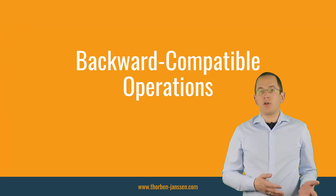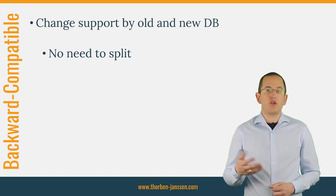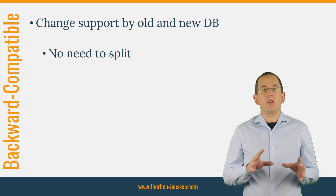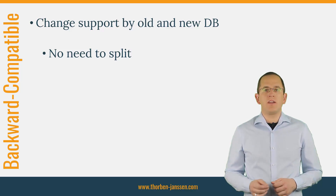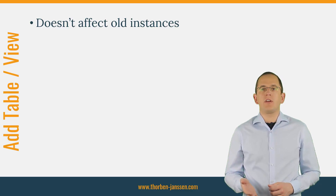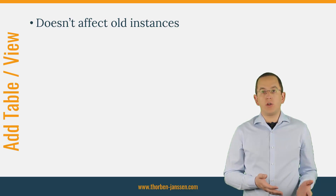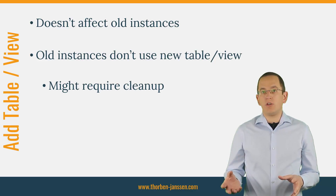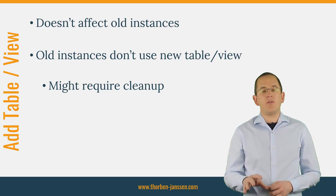Let's take a closer look at the backward compatible operations first. Backward compatible operations are all operations that change your database in a way that it can be used by the old and the new version of your application. That means you can execute them during a migration step and don't need to split them into multiple operations. Adding new tables or views doesn't affect the old instances of your application. Just keep in mind that while you are performing the rolling update, some users might trigger write operations on old application instances. These old instances obviously don't write any data to the new tables.